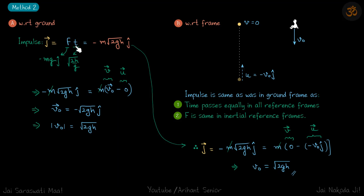Time taken for it to fall through height h we can find from equation of motion and that gives √(2h/g). Solving this we get our impulse as -m√2gh ĵ cap which we can write as change in momentum.